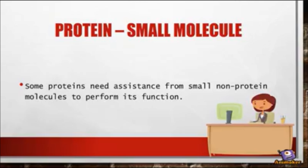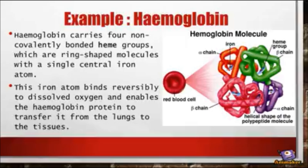Protein-small molecule interactions occur because sometimes a protein needs assistance to perform its function. Hemoglobin, for example, needs iron in order for it to function.